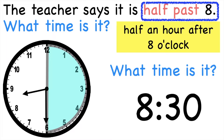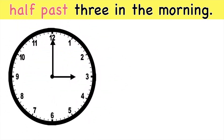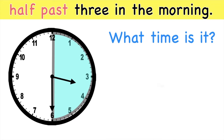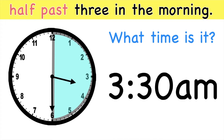How about if you have this? Half past 3 in the morning. What time is it? So for example, this is 3 o'clock. Half past — let's count how many minutes: 5, 10, 15, 20, 25, 30. So what time is it, children? It's 3:30. Half past 3 in the morning is 3:30 a.m.